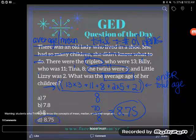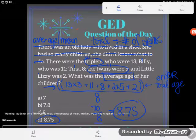And so there's my answer, 8.75 is the average or mean age of the children. Great, if you have any questions about this or any other GED concept, be sure to drop it in the comments and I'll be happy to answer it.